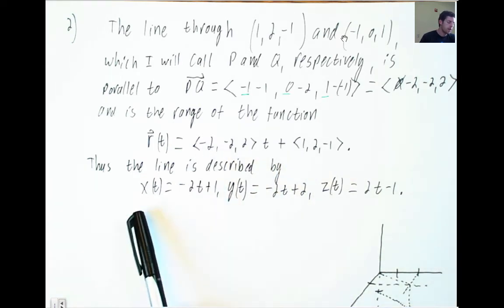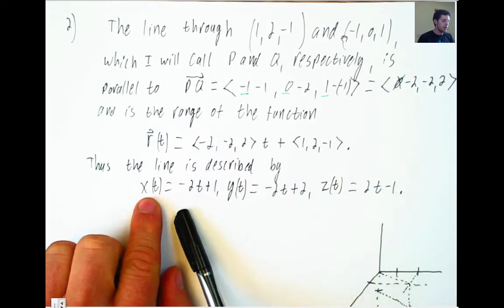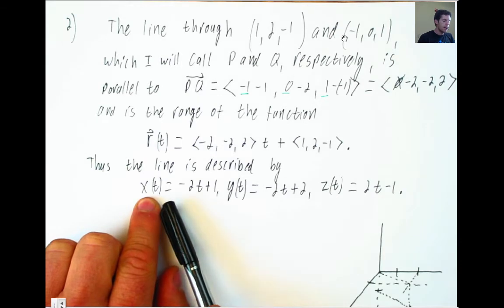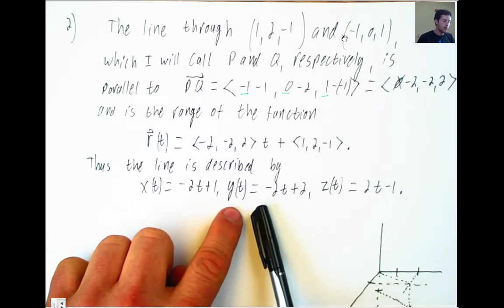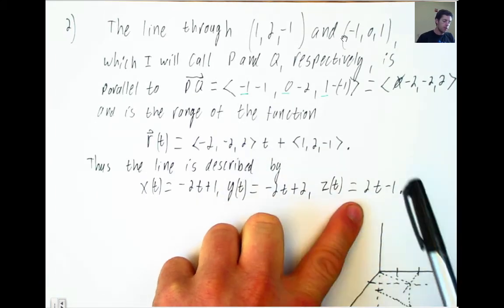Thus, the line is described by these three things: negative 2t plus 1 is the description of the x component, the first component. And similarly, y(t) is -2t plus 2, and z(t) is 2 times t minus 1.